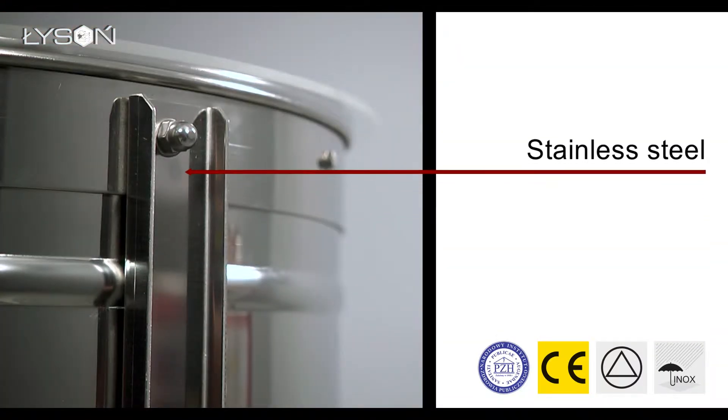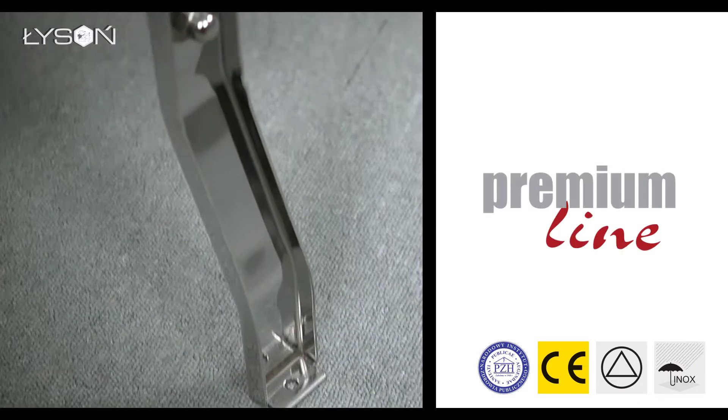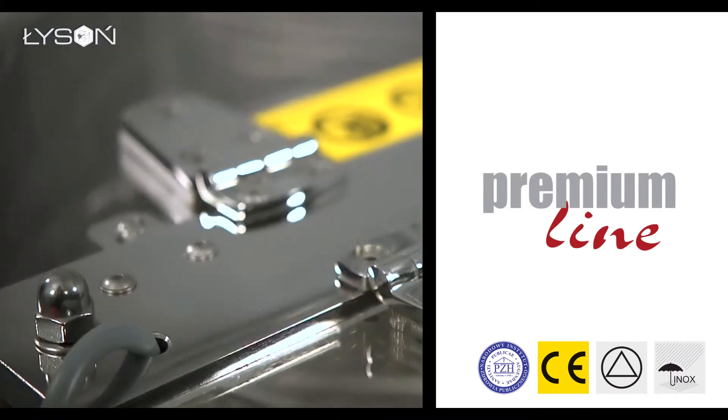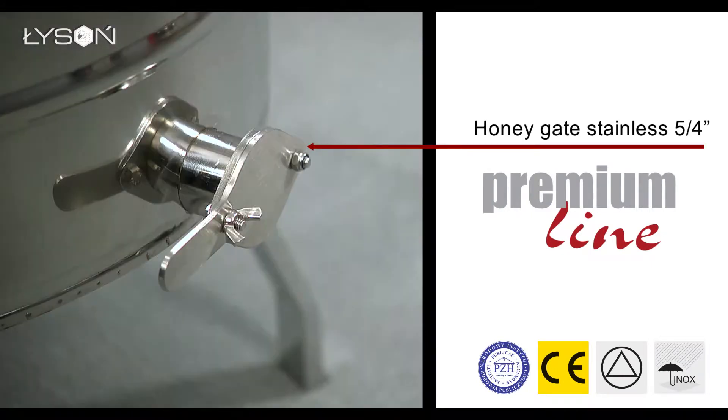All construction elements are made of acid-resistant stainless steel including legs, the top bar, cover hinges, the cover knob and the honey gate.